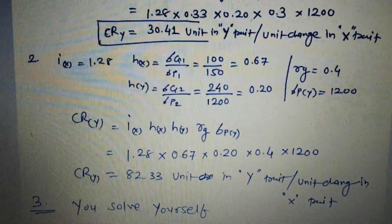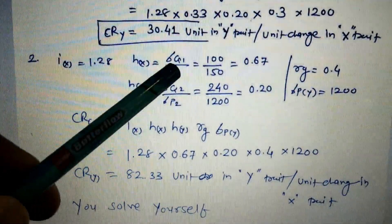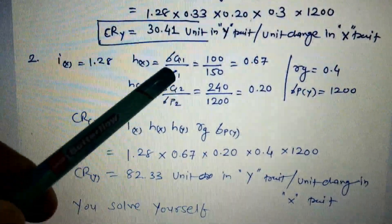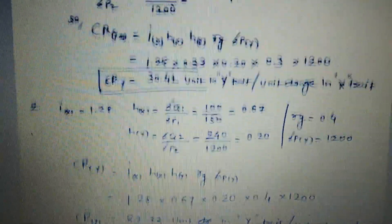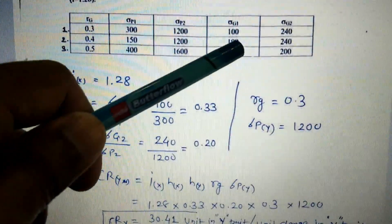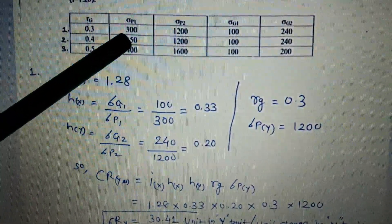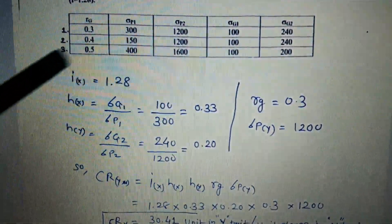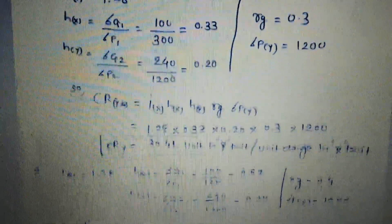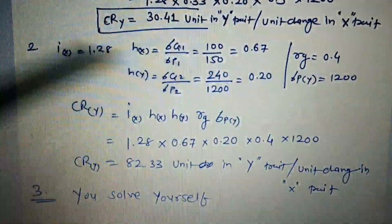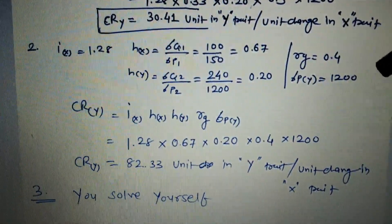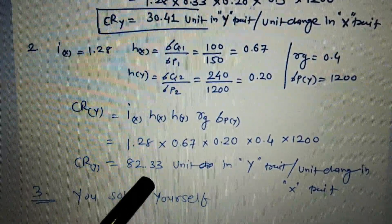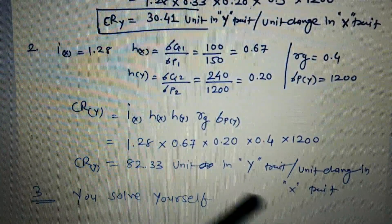For example two, i = 1.28 again. Square root of heritability for X = genotypic SD / phenotypic SD = 100/150, and for Y = 240/1200. With rg available and σ_Py = 1200, the correlated response CR_y = 82.33 units in the Y trait per unit change in the X trait.